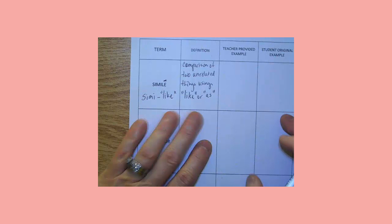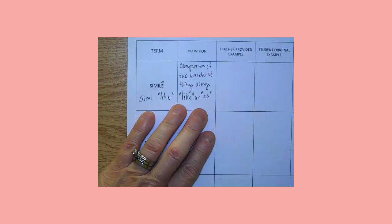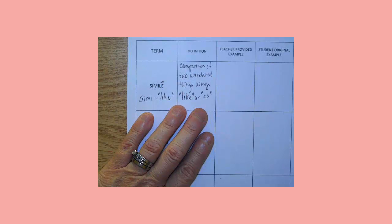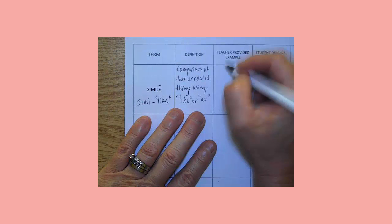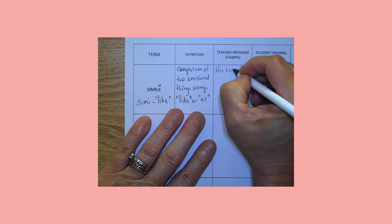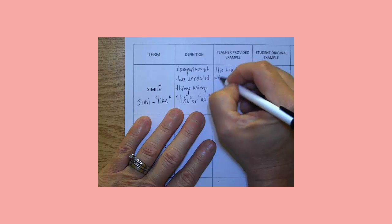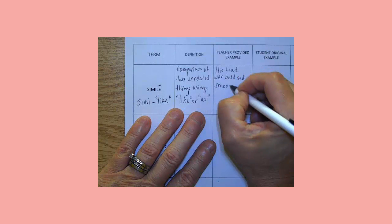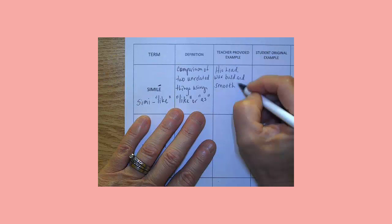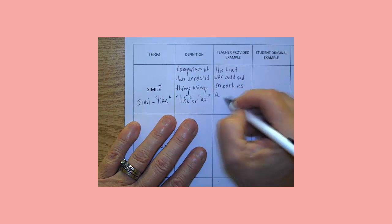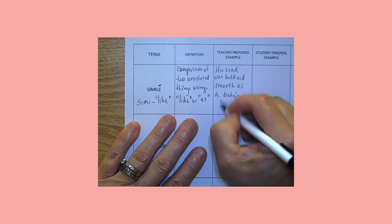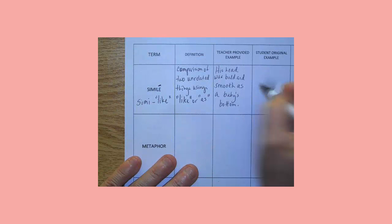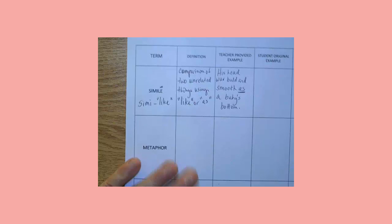We're going to pick two things, and for this example I've picked some funny ones, just because I like to laugh. I chose a bald head and a baby's bottom. So here's my simile. His head was bald and smooth as a baby's bottom. Go ahead and underline the word as, because that's what makes it a simile.